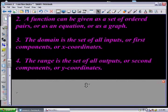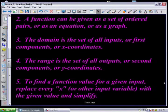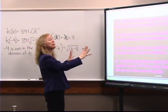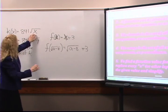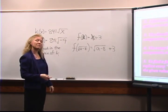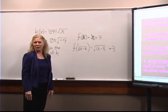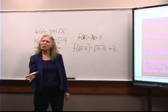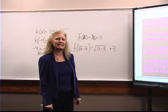Of course we also talk about outputs — that's the range: the set of all outputs. You can think of that as the second component of your ordered pair, your y-coordinates. And our very last idea: to find a function value, simply replace every x on the right side of your function with that particular input variable, then simplify what you have. We're going to be doing a lot of work with functions — I hope you've got a beginning idea here.